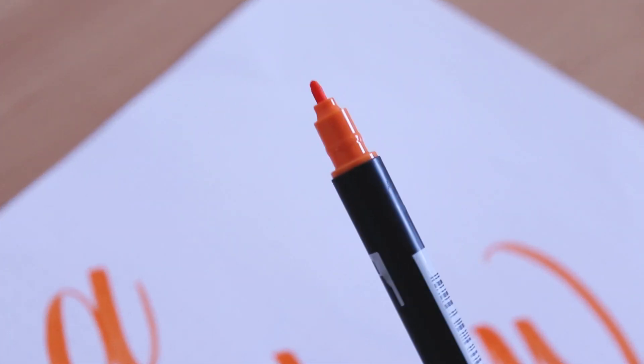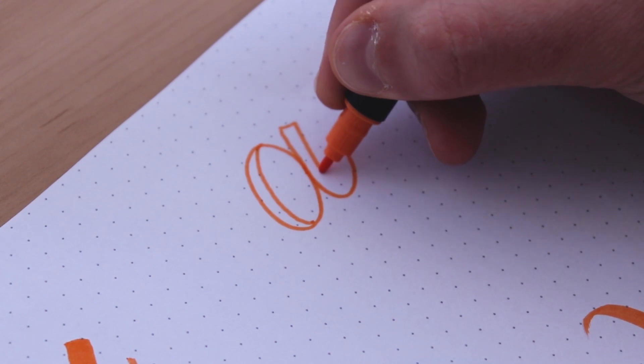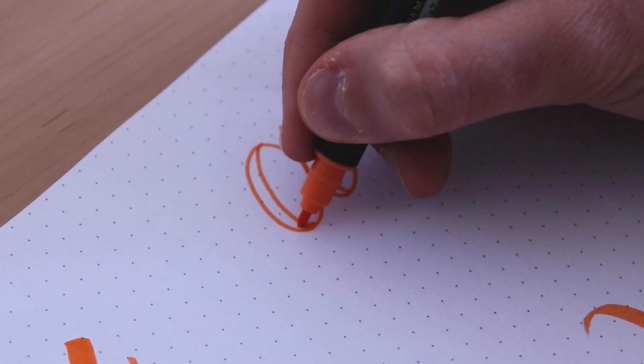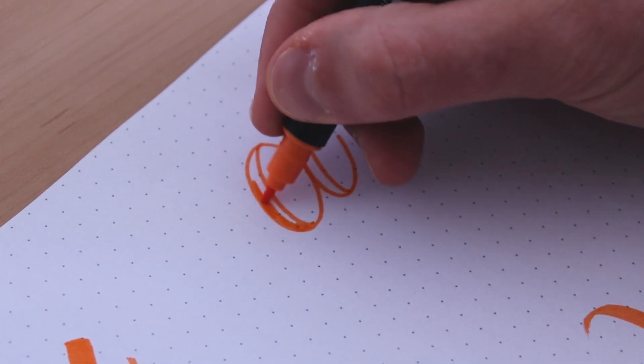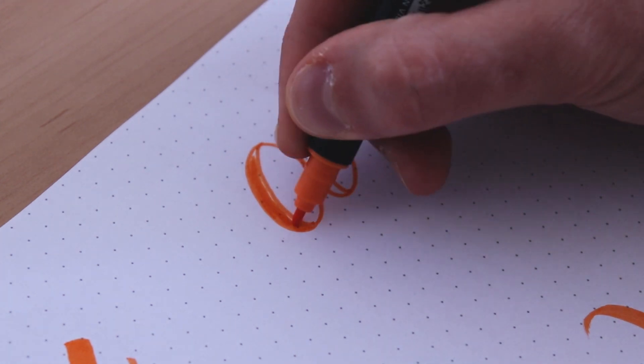Additionally this pen comes with a second tip on the other end, hence the name. It's a smaller firm tip that can be used to fix up some details or even as a standalone tool for lettering, faux calligraphy, illustrations etc.